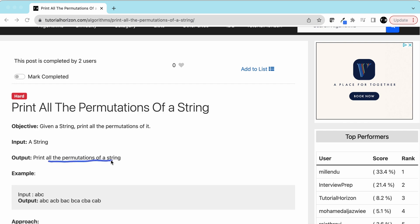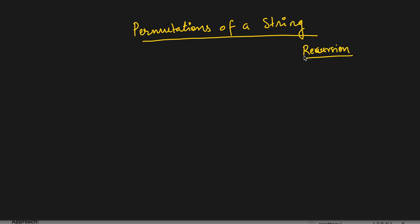Our objective is to print all the permutations of a string. We are going to use recursion to solve this problem because iterative solutions are quite tricky, and we'll see the power of recursion in the solution. Let's say we have the string 'abc'. First, we'll have a pointer called the left pointer, currently pointing to 'a', and then we have another pointer called 'i'. We are going to swap the characters at the left and i indices.